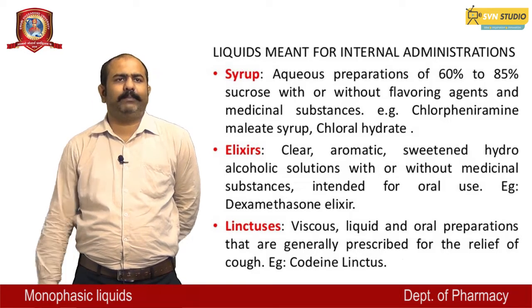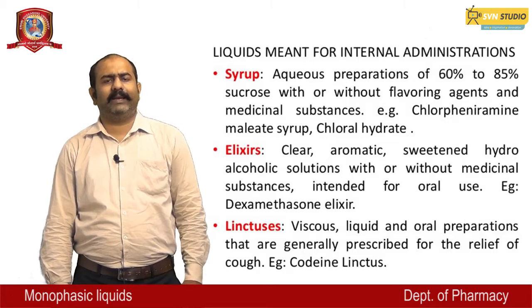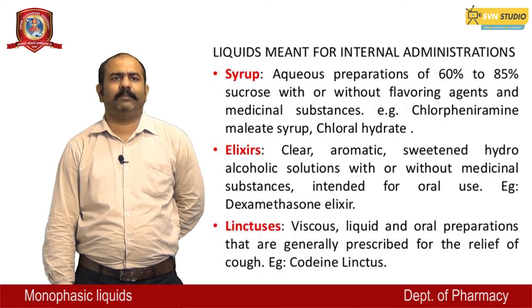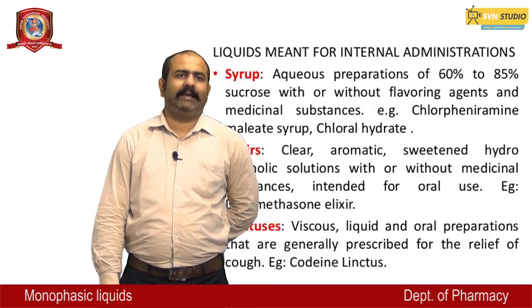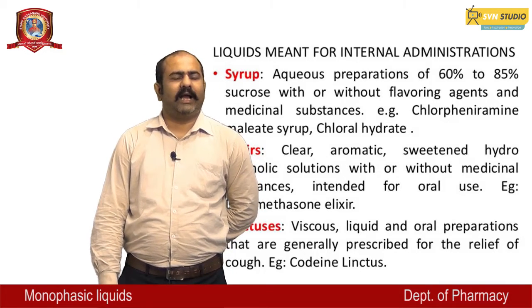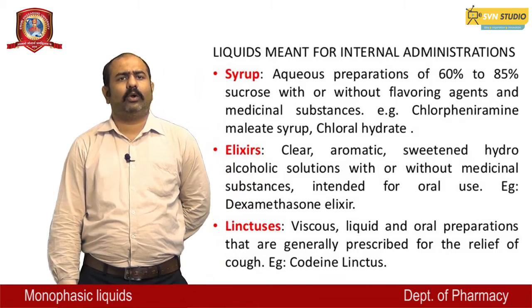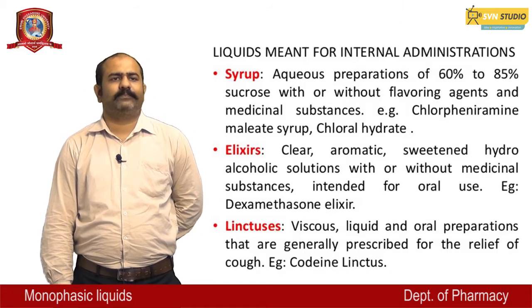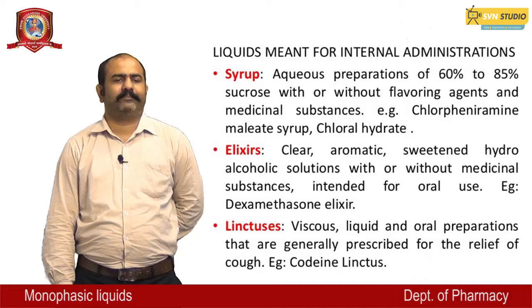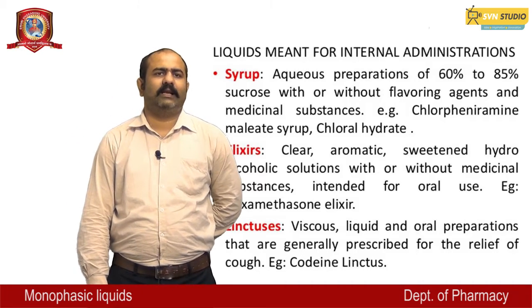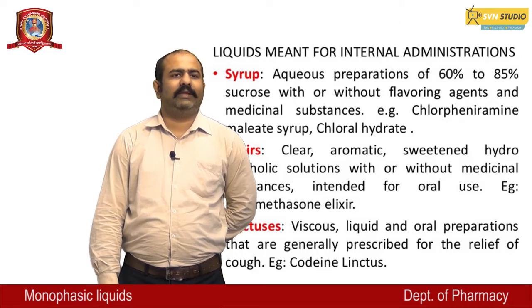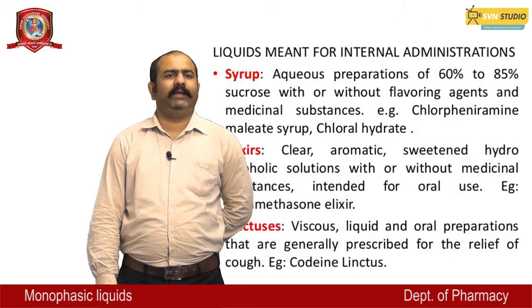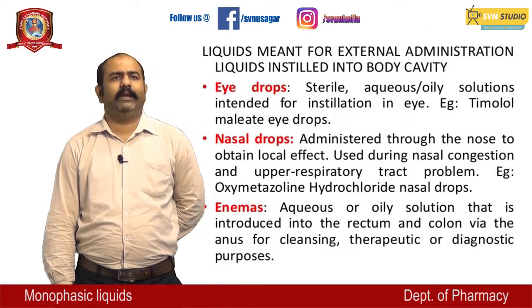Liquids meant for internal administration: Syrups — aqueous preparations of 60 to 85 percent sucrose with or without flavoring agents and medicinal substances, like chlorphenamine syrup and chloral hydrate. Elixirs — clear, aromatic, sweetened hydroalcoholic solutions with or without medicinal substances intended for oral use, example dexamethasone elixir. Linctuses — viscous liquid oral preparations generally prescribed for the relief of cough, example codeine linctus.